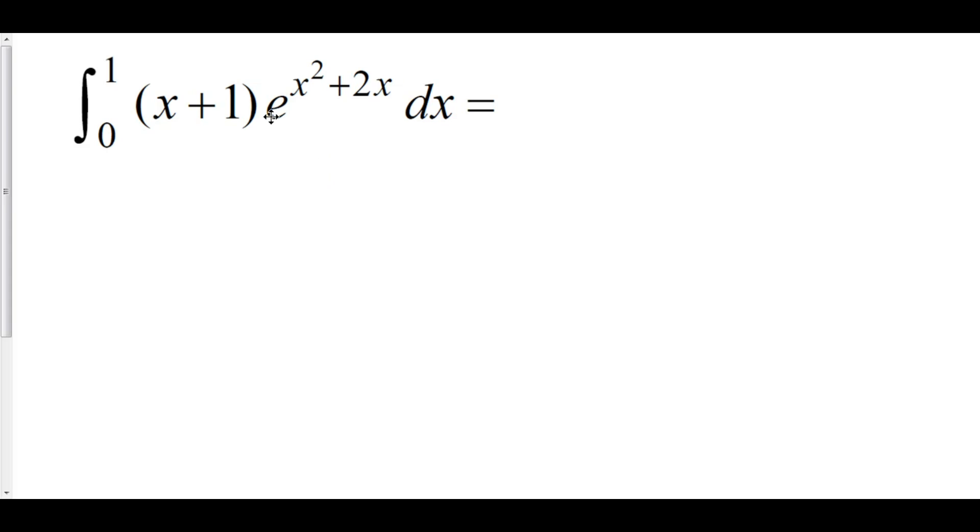Again, when we have e to the stuff, the derivative of that is going to be e to the stuff times the derivative of that stuff. And there's no other e to the stuff around here, so e is not going to be in my function. Likewise, when I take the derivative of x plus 1, I get 1. Well, that's not going to help me at all. However, if I take the derivative of x squared plus 2x, I wind up with 2x plus 2. Well, I have an x plus 1 here, so maybe I can do something with that in the future. Let's just try it out though.